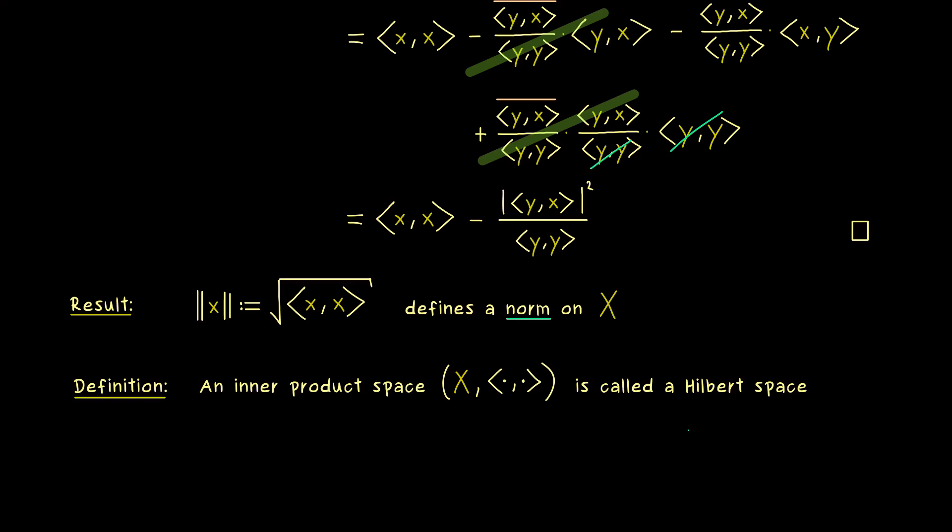We take an inner product space and we call it a Hilbert space if it is also a Banach space, which simply means it's a complete space. So what we have is that X together with this new norm is a Banach space. There we have it, now you know what a Hilbert space is.